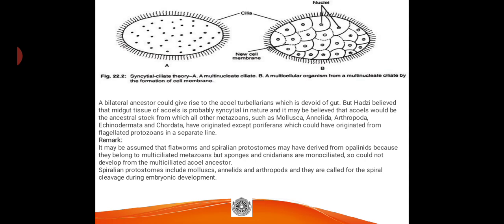Protostomes are animals in which the opening of the blastocoel — called the blastopore — gives rise to the mouth but not the anus. In animals called deuterostomes, that blastopore opening gives rise to the anus. The strong conclusion of this theory is that flatworms are the ancestral stocks for multicellular animals, but not for sponges, because sponges are derived from monociliated protostomes.